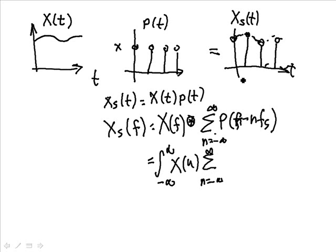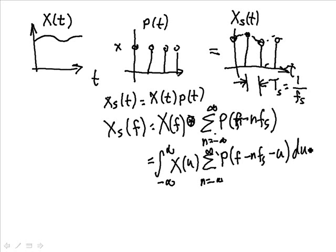And this f s is just a sampling frequency. So if this was right here, separation of t, we'll call it s, then that's just 1 over f of s, sampling frequency. And n is our harmonics. And it's an integer. So that's just P f minus n f s minus u du.